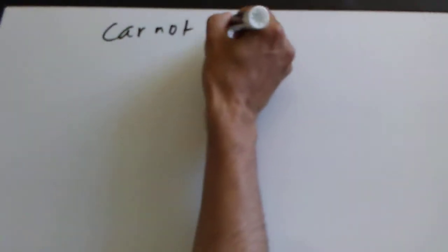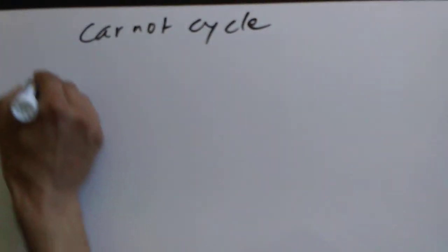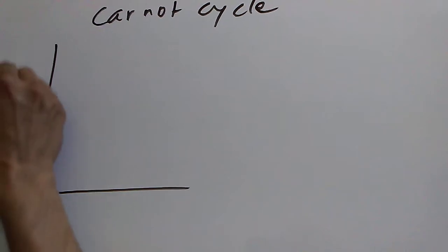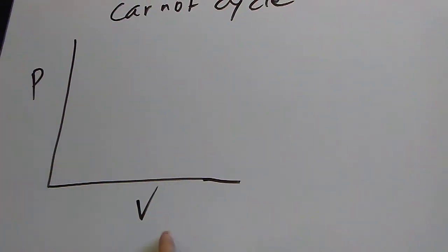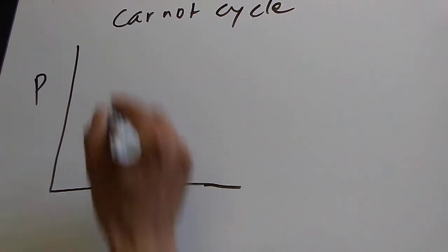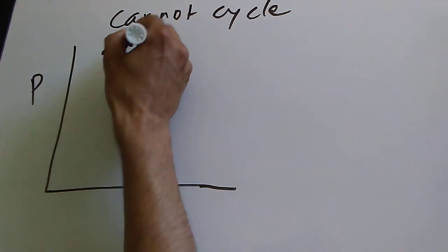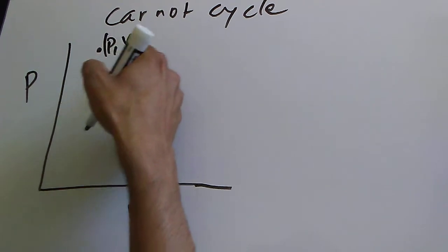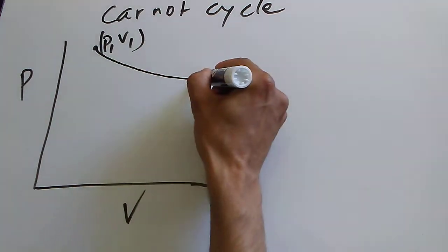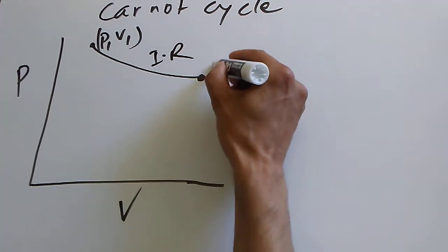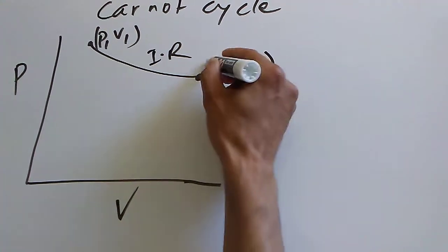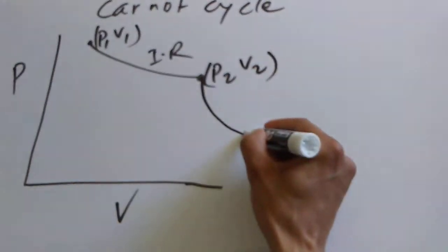I'm going to show how to calculate the work done in the Carnot cycle. In the Carnot cycle, we expand the gas and plot the data in a PV plot. At the beginning, we have the gas at state P1 and V1. We expand the gas isothermally and reversibly, and the final pressure and volume are P2 and V2.